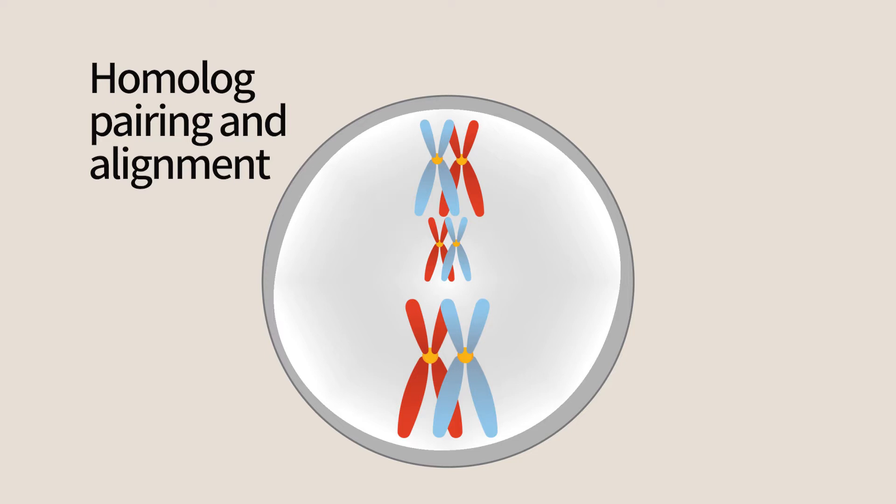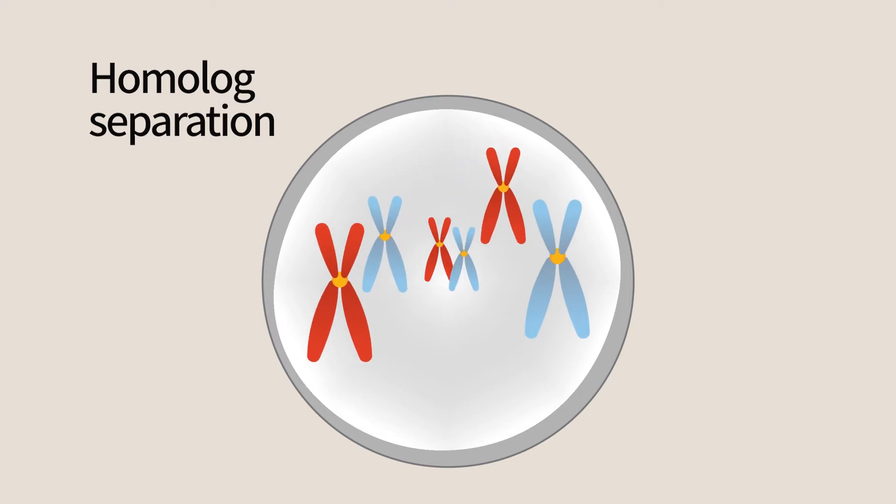After homologues pair, they are pulled by the spindle in the line like in mitosis in the middle of the cell. The homologues are then separated and pulled towards the poles of the cell.